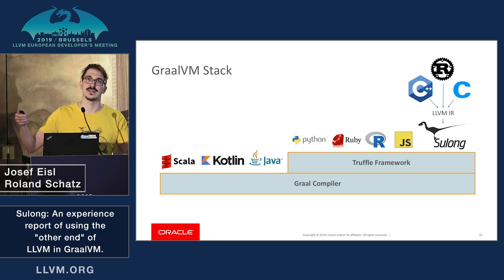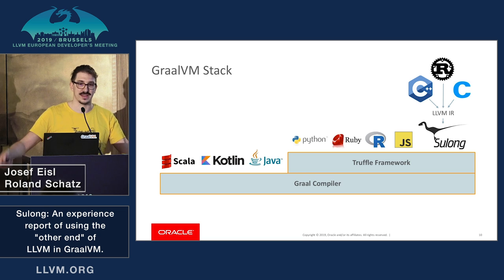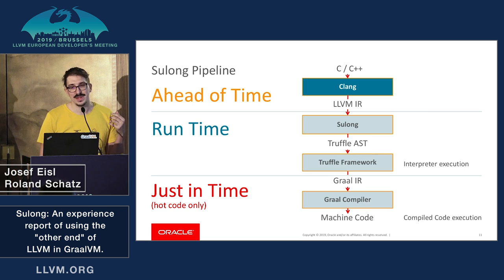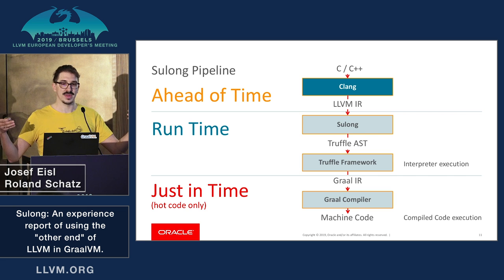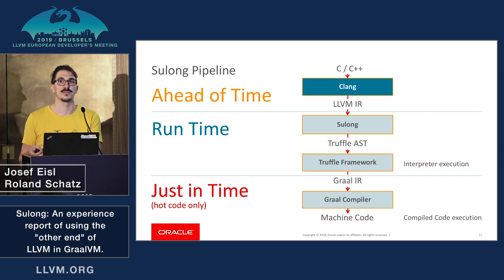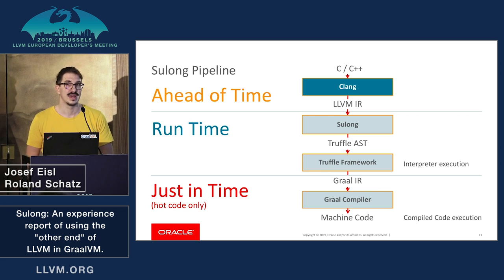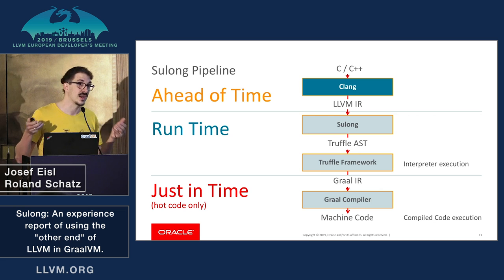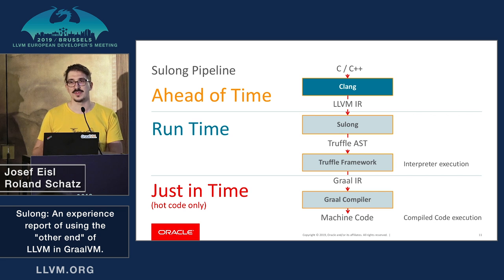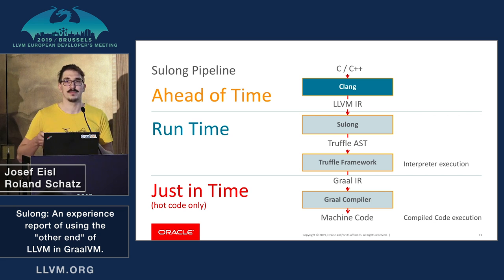Sulong adds all kinds of low-level languages to this stack. The pipeline looks like the following: ahead of time, we do compilation from the input language like C or C++ to LLVM bitcode using a frontend like Clang. Then at runtime, Sulong translates this LLVM IR — this LLVM bitcode — into a Truffle abstract syntax tree, which is then interpreted, but may also be compiled if the code is considered important.